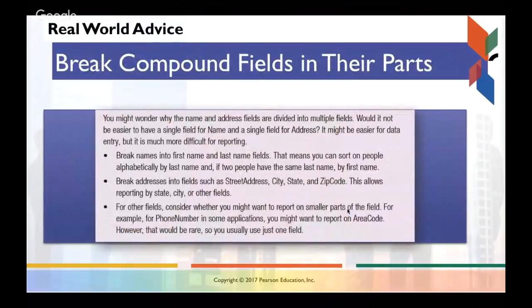So some real-world advice. You want to break down compound fields into their parts. This is part of what's referred to as normalization. For example, names need to be broken up into first and last name fields. Addresses should be broken up into street address, city, state, and zip. Phone numbers shouldn't have anything else. You want your fields to be singular, and that's very important for databases.